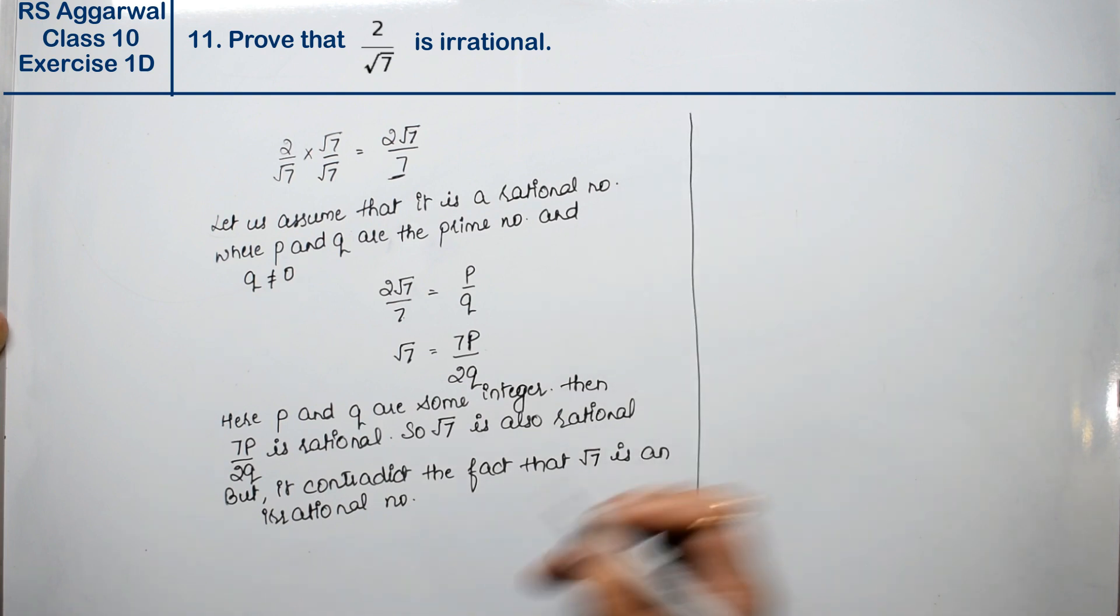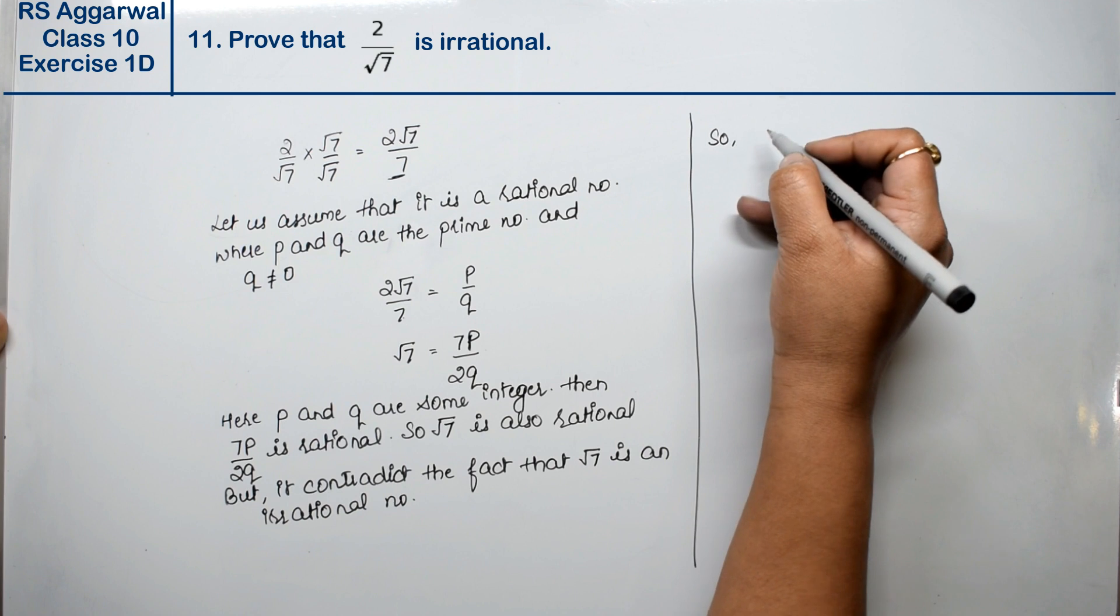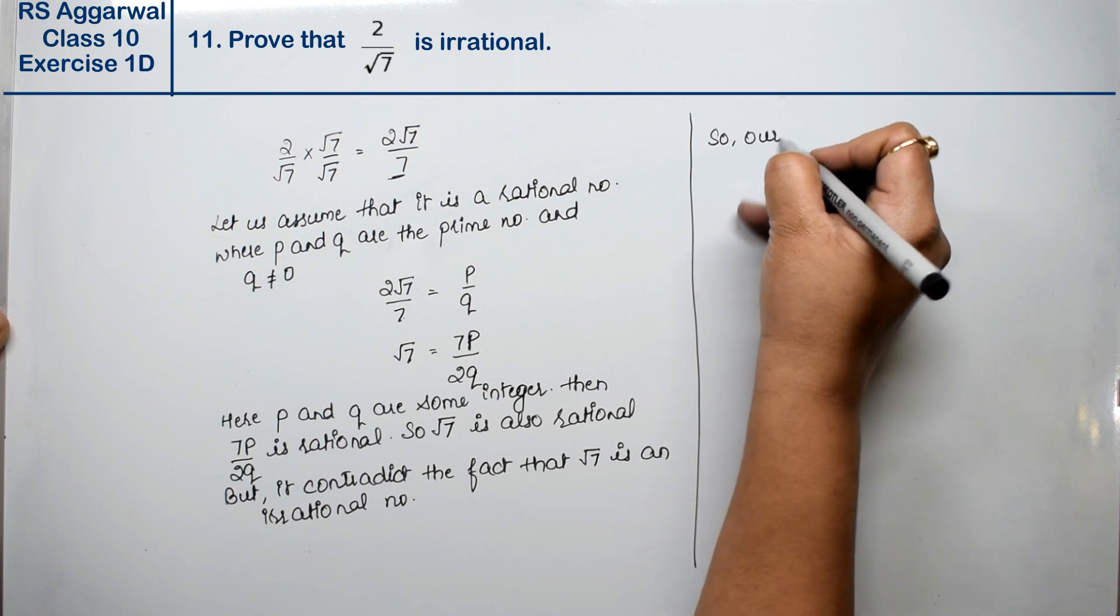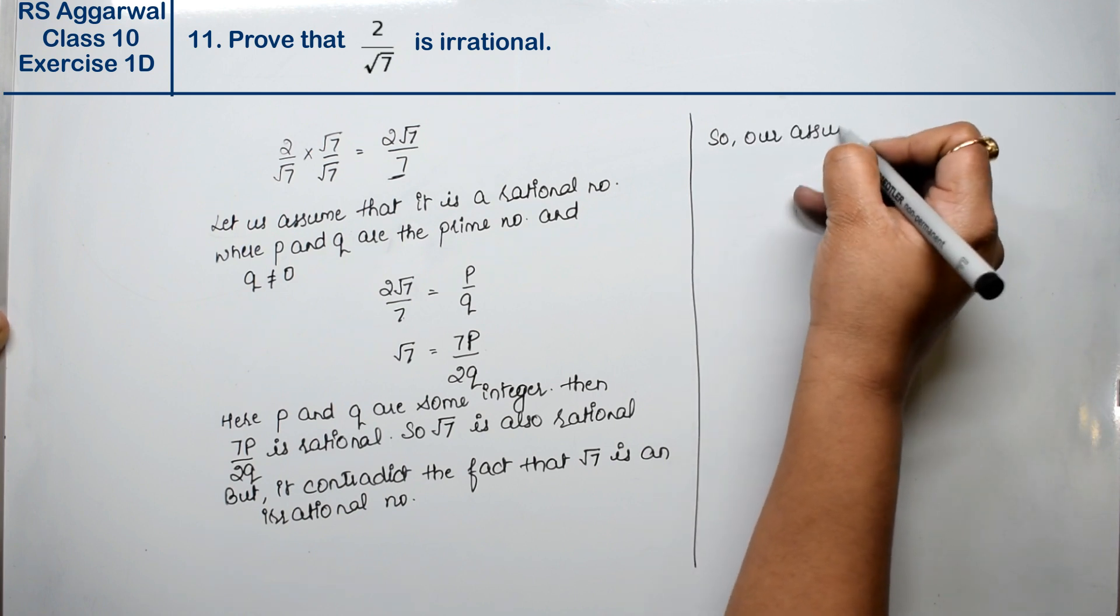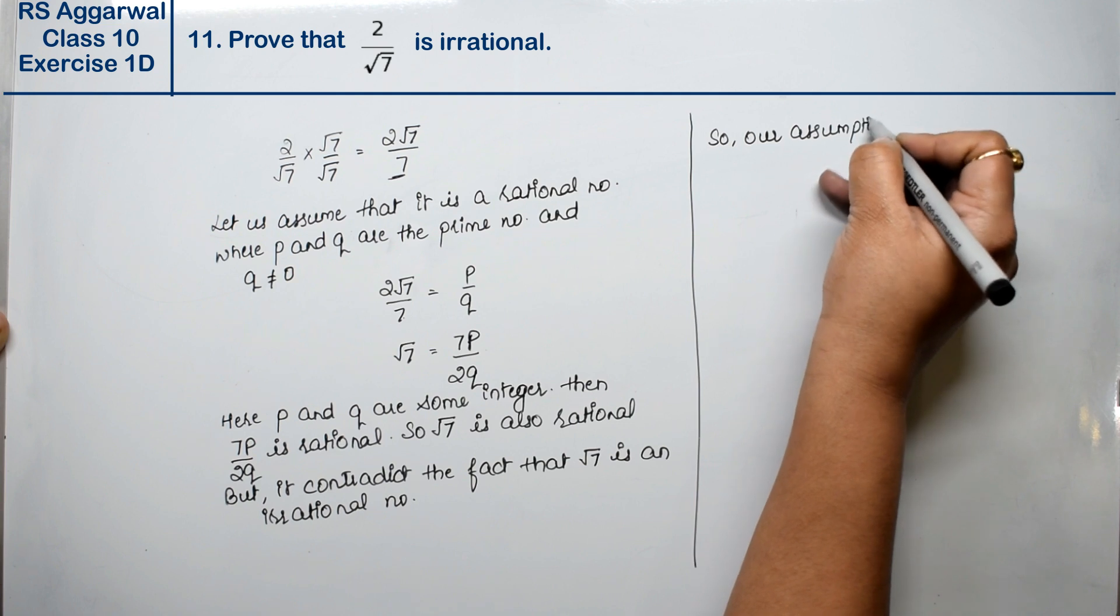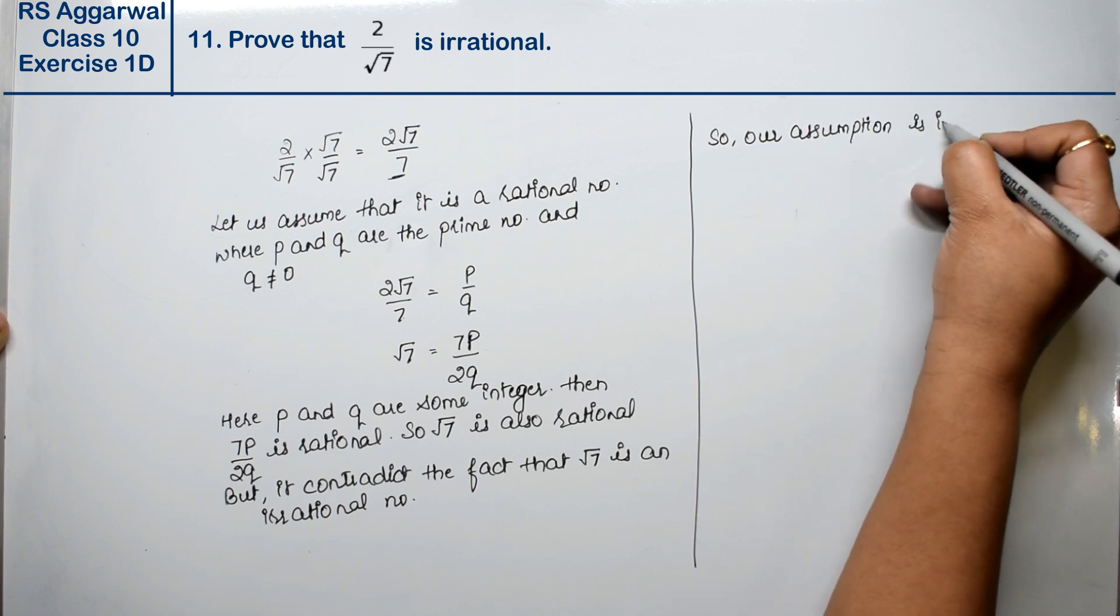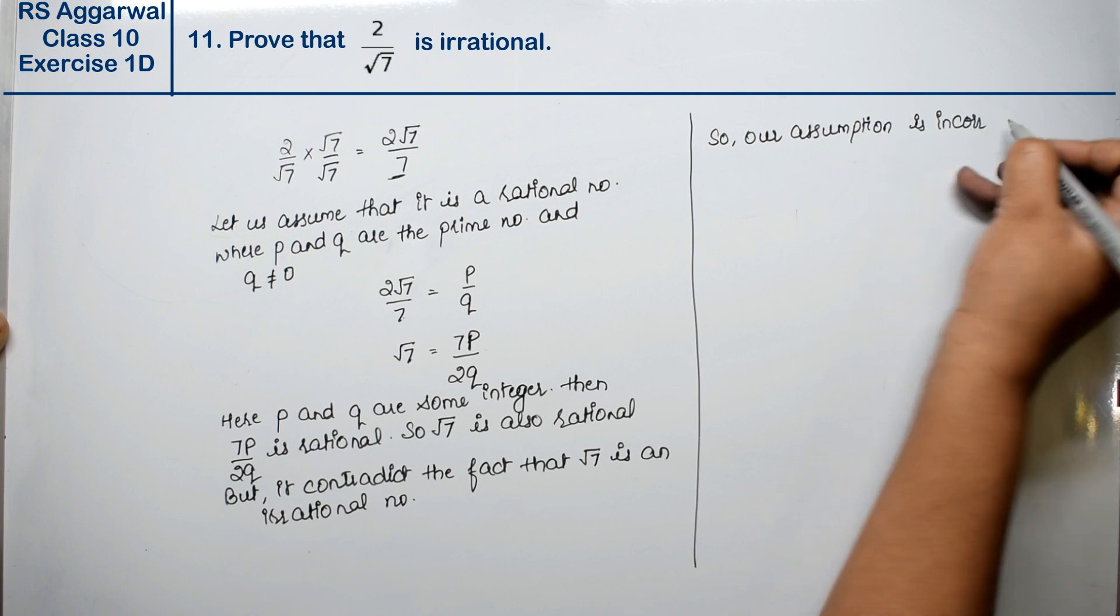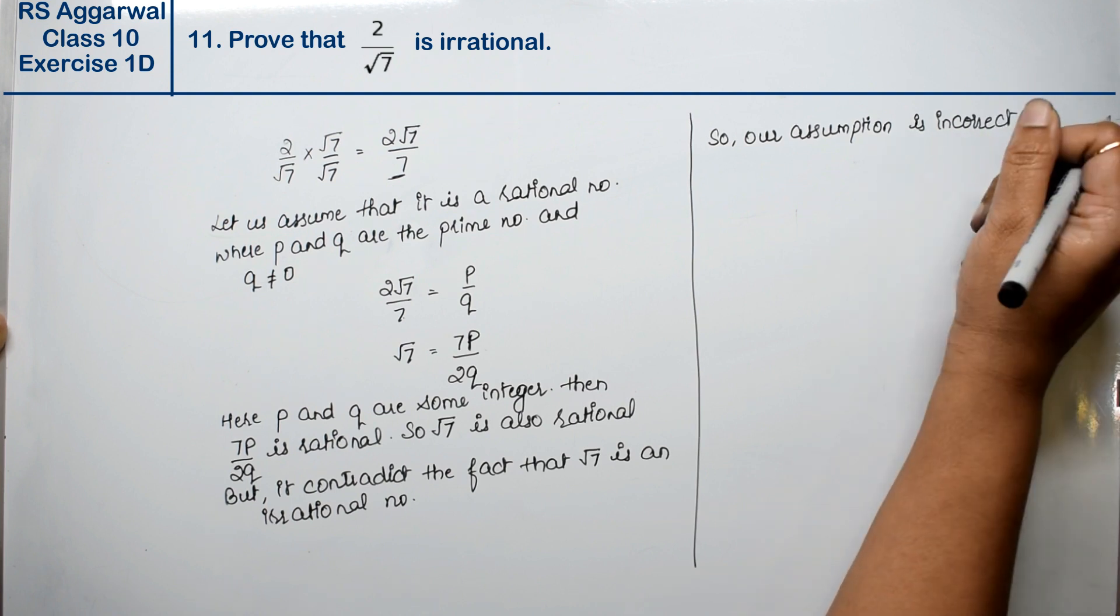We can say that our assumption is incorrect. Our assumption that it is a rational number is incorrect.